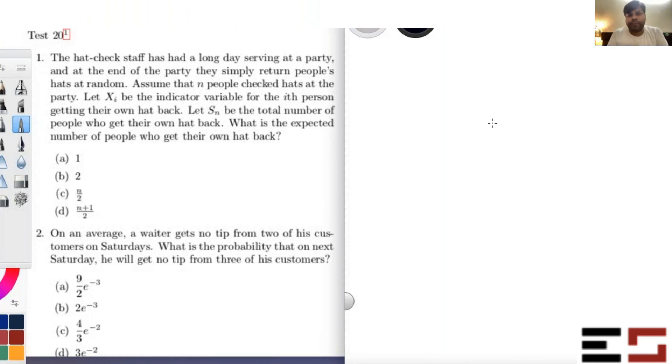So the total number of people who get their own hat back is actually Sn which can be written as X1 plus X2 plus Xn, right? Now it can be written as a sum of the indicator random variables. Do you agree? Yes. Okay.